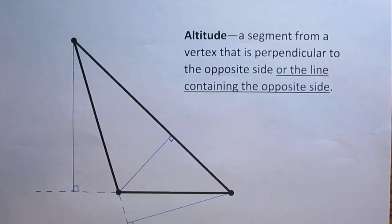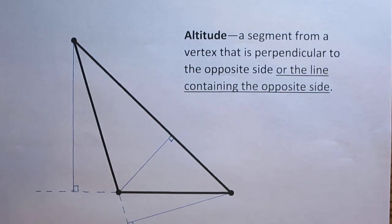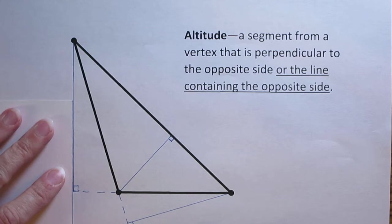Now you'll notice that my three altitudes, one, two, three, they haven't met at a single point yet. But you'll notice that they each seem to be converging at a point that's somewhere out here. So to find the orthocenter where all the altitudes meet up we're just going to extend the line of each of these altitudes.